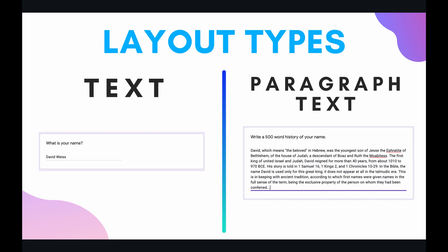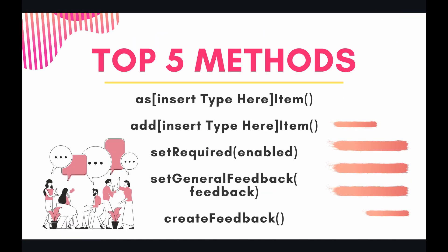We're going to look at both of these types of text items in the code. First, let's review our methods for today. I have five methods I use quite frequently: as [type] item — for example, as text item or as paragraph text item; add [type] item — such as add text item; set required; set general feedback; and finally, create feedback.